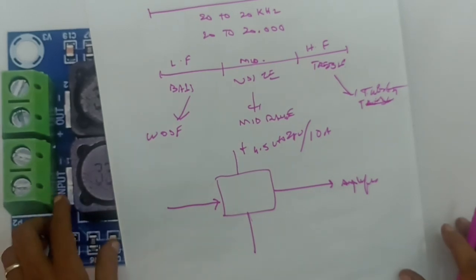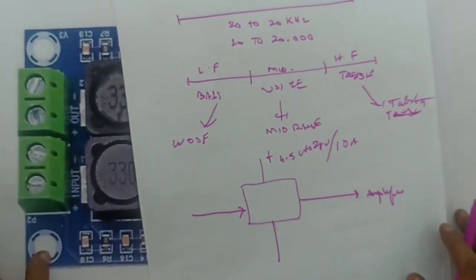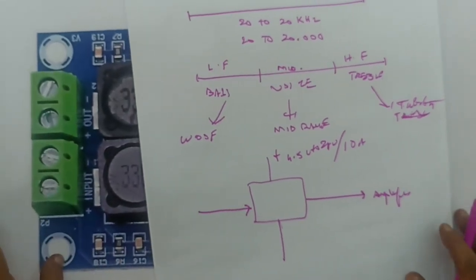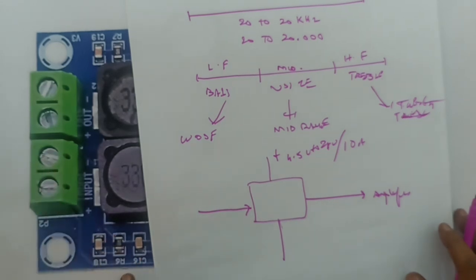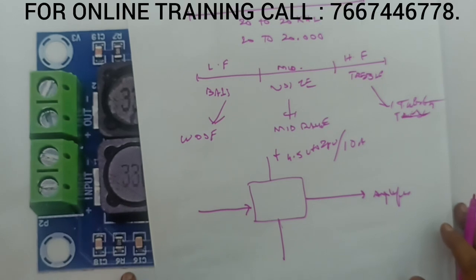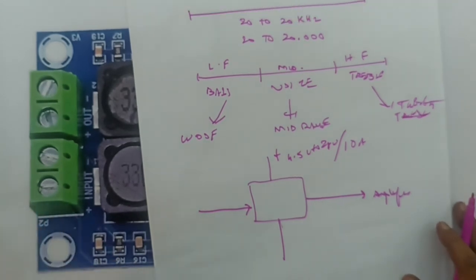This is the IC. What input — low frequency, high frequency, mid frequency — it is the quality of the amplifier. You will see the connection. There is a good quality output. I am going to do a demo.